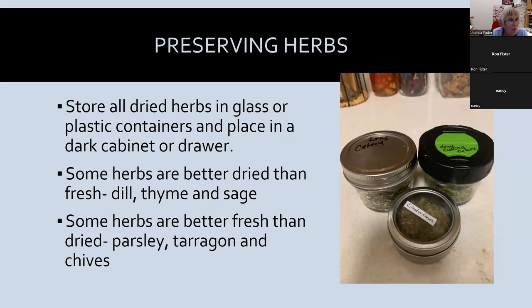Store all dried herbs in glass or plastic containers in a dark cabinet or drawer, and make sure you label them — once dried, the leaves all look alike. Some herbs are better dried than fresh, like dill, thyme, and sage; others are better fresh. Start experimenting — dry them, freeze them, see which way you like best — and you'll get familiar with them and find what works for your uses.